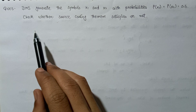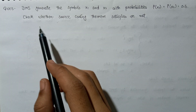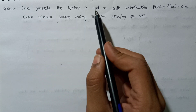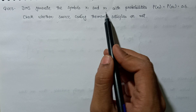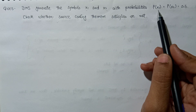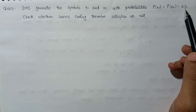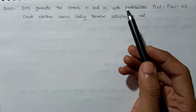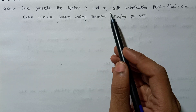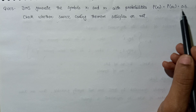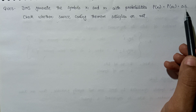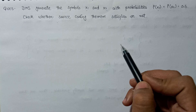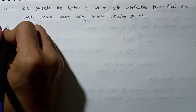Now let's look at a question based on Shannon's noiseless coding theorem. A discrete memoryless source generates two symbols x1 and x2 with equal probability of occurrence: p(x1) = p(x2) = 0.5. These two symbols are equiprobable. We need to check whether the source coding theorem is satisfied.